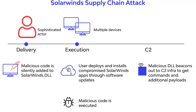A good example of this is the SolarWinds attack, which penetrated many more than a few dozen government and enterprise networks. As many as 250 organizations were affected, and the attackers took advantage of multiple supply chain layers.